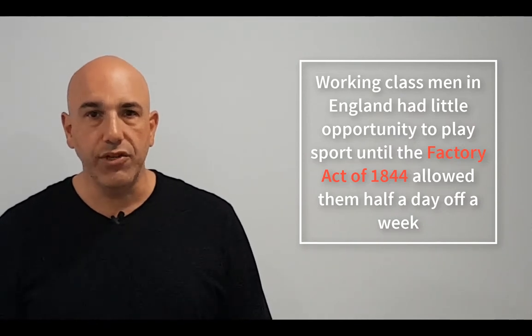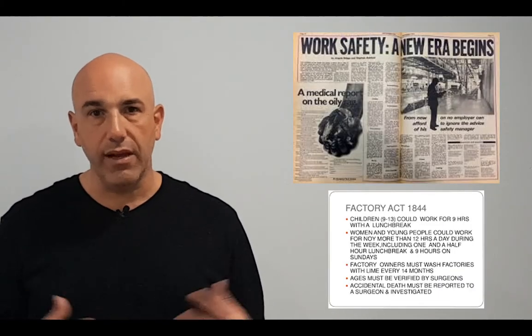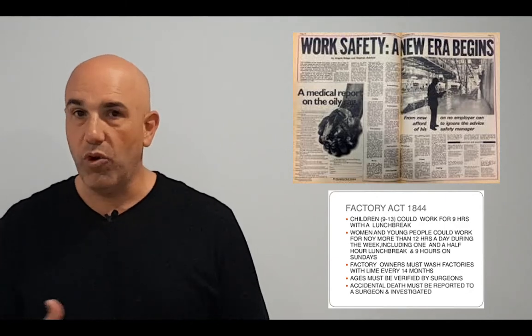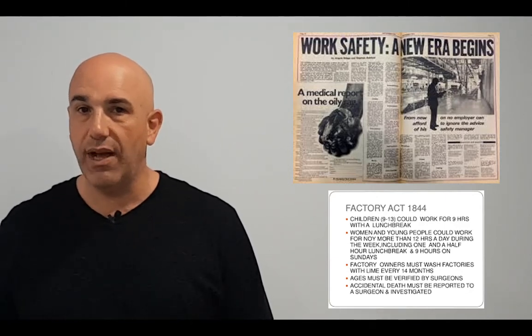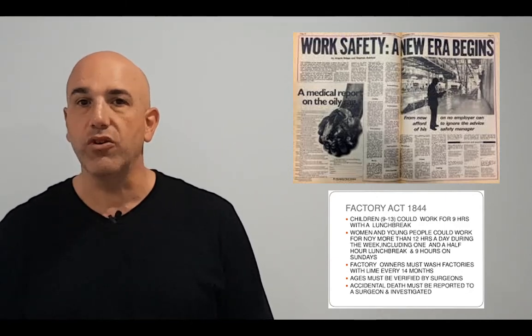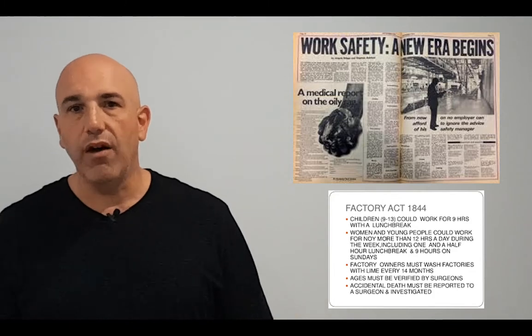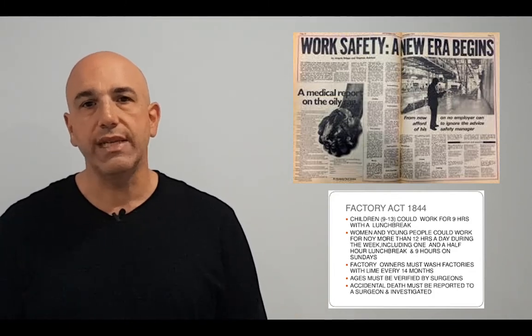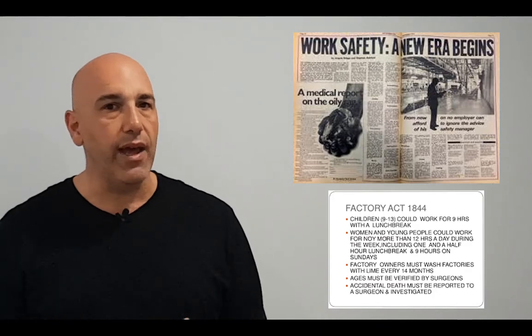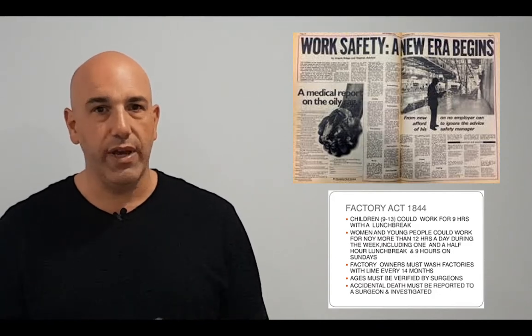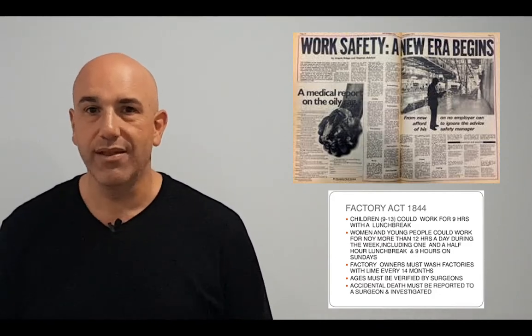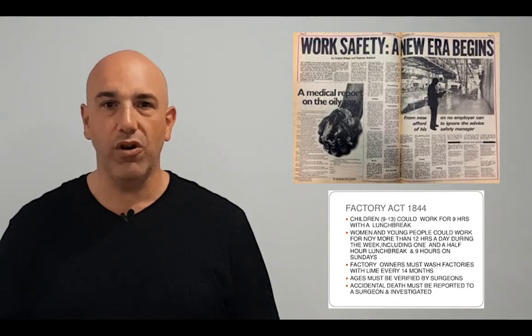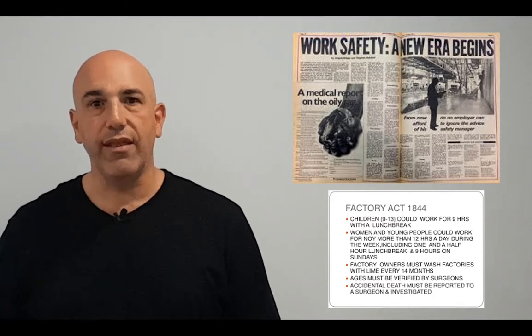That changed with the Factory Act of 1844, which allowed workers at least half a day off per week. Imagine being a working class person in the 19th century, working seven days a week with long hours. The Factory Act ensured workers got at least half a day off — perhaps Sunday afternoon after 12 — giving them a bit more opportunity to get involved in sport.